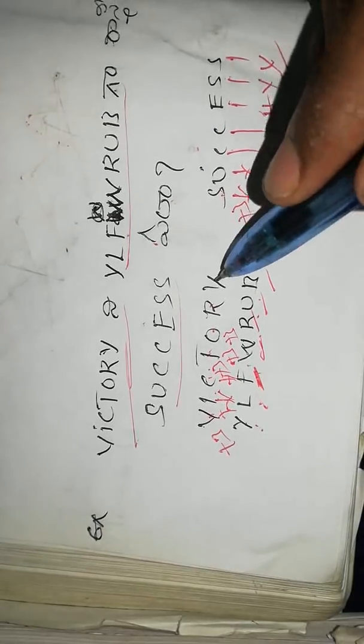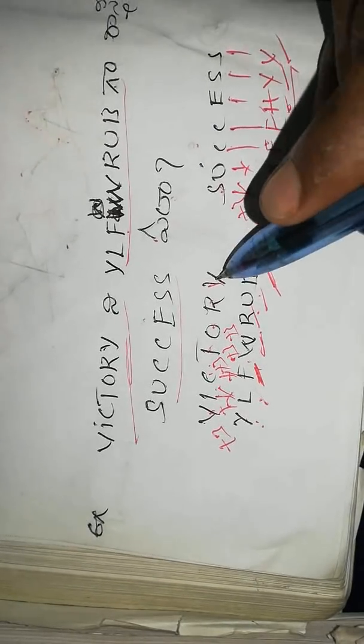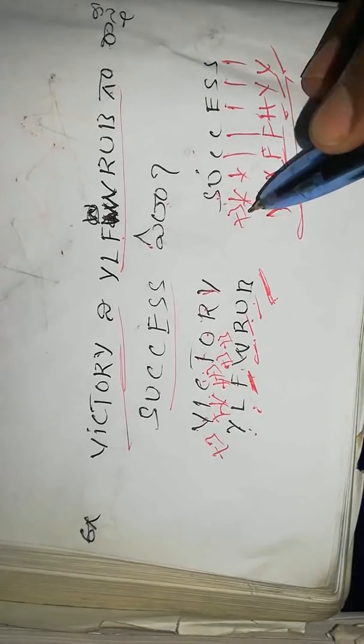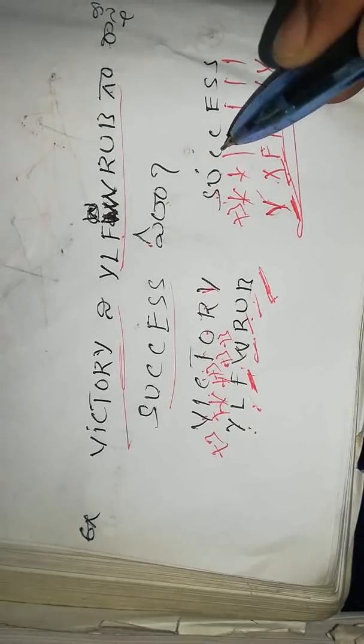Victory is coded as YLFWRUB, and success is the answer. If we look at the parallel, V to Y — here is the connection. The shift pattern is plus 3 throughout: each letter is shifted by 3 positions forward. This consistent +3 shift applies to all letters in the word.